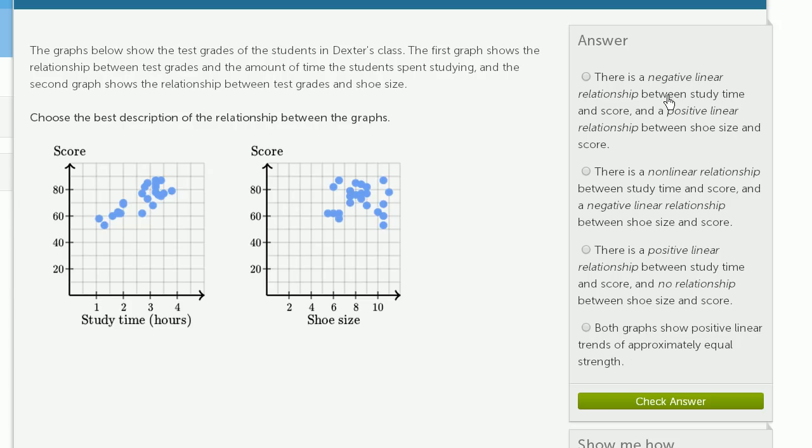There's a negative linear relationship between study time and score. Now that's not true, it looks like there's a positive, a positive linear relationship. The more you study, the better your score would be. A negative linear relationship would trend downwards, like that.